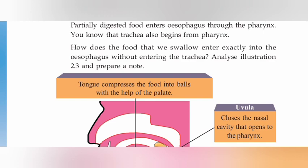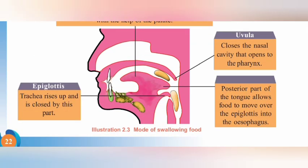How does the food that we swallow enter exactly into the esophagus without entering the trachea? We will try to understand how the esophagus works and there are 4 important points to cover.